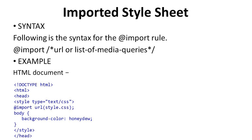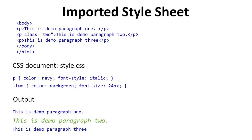In the body, we set background color to honeydew, then close the style and head tag. In the body section, we take a P tag with content 'This is a demo.' Next, a P with class equal to '2' containing 'This is a demo paragraph 2.' And another P tag with 'This is a demo paragraph 3.' Then we close the body and HTML. In the CSS document style.css we define the P tag and class 2 styles.